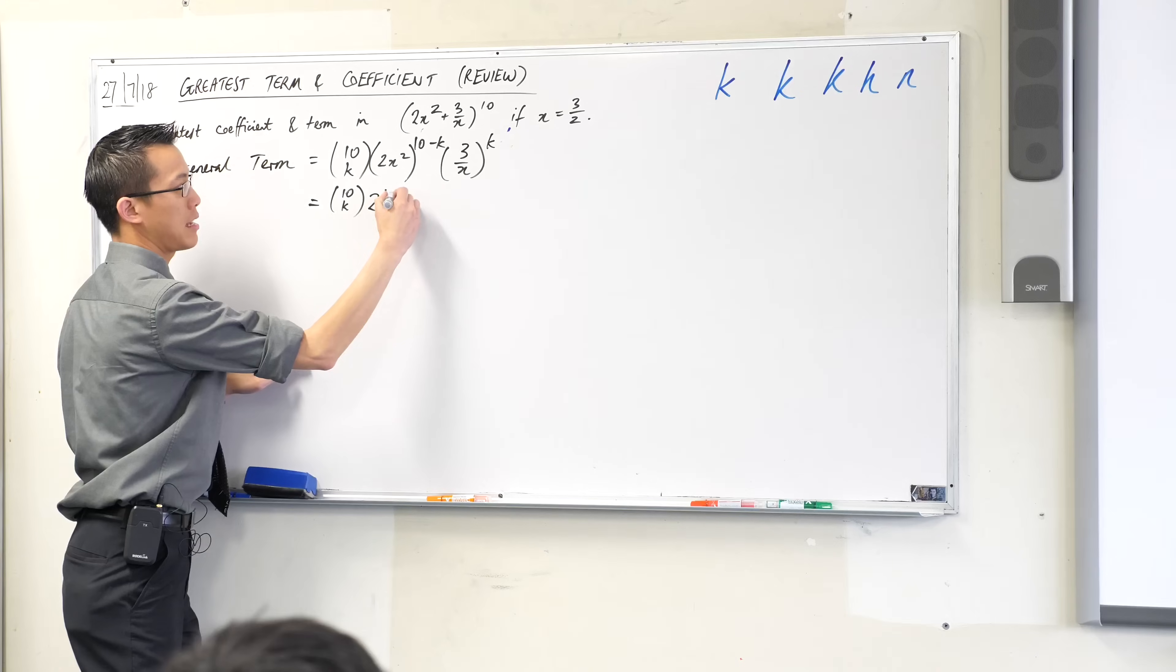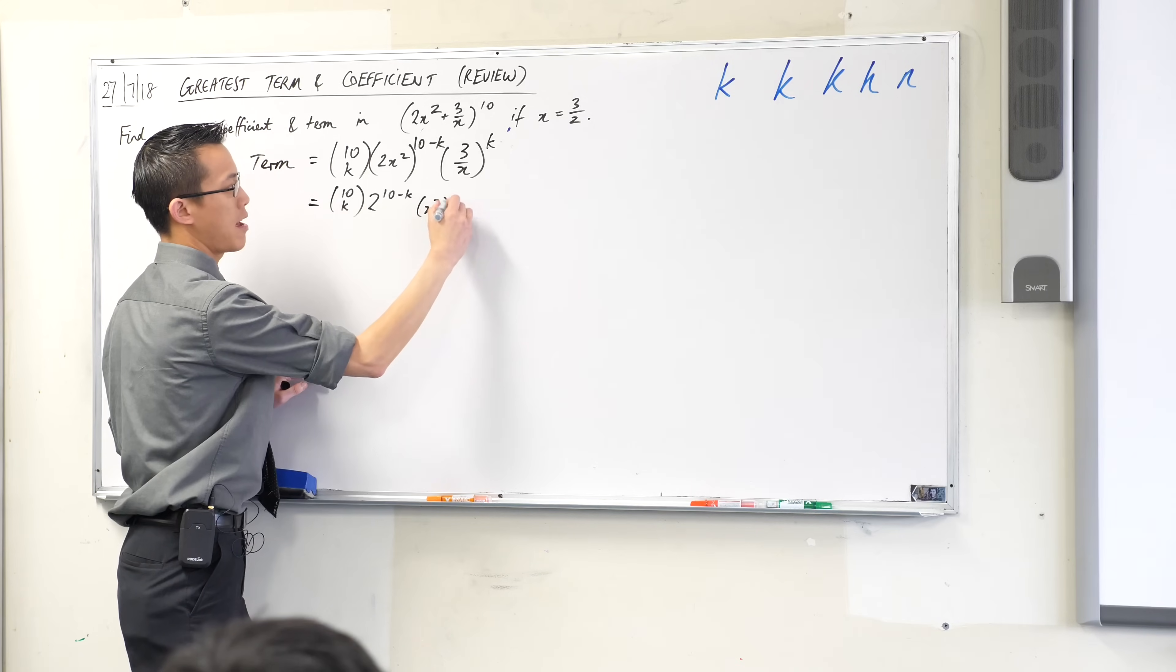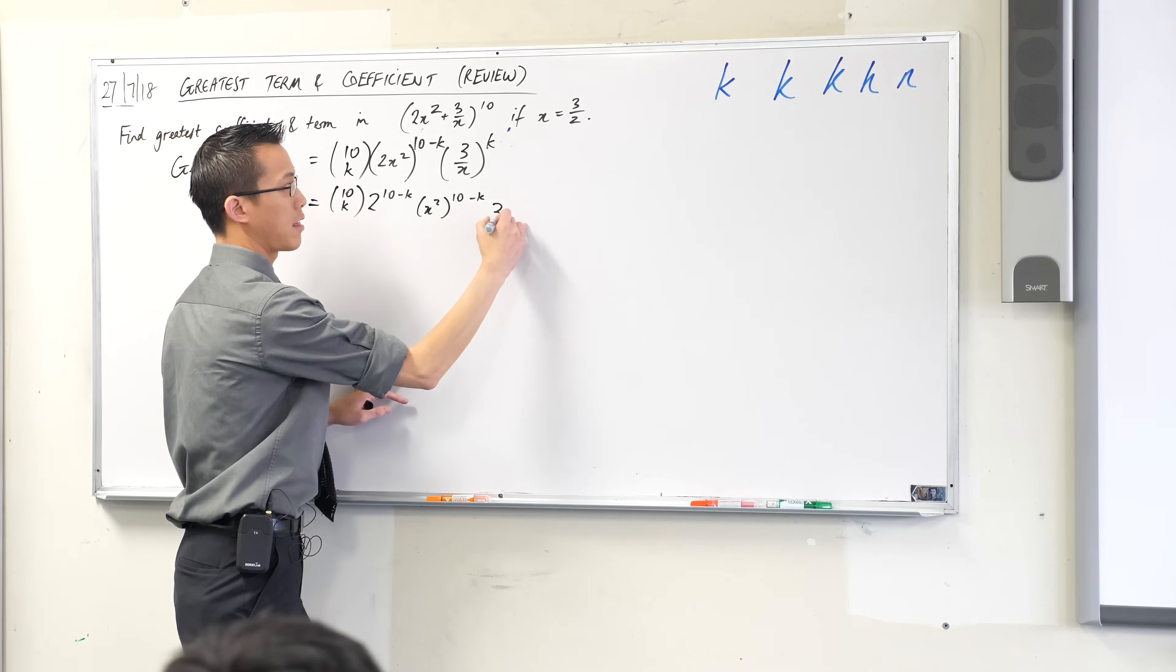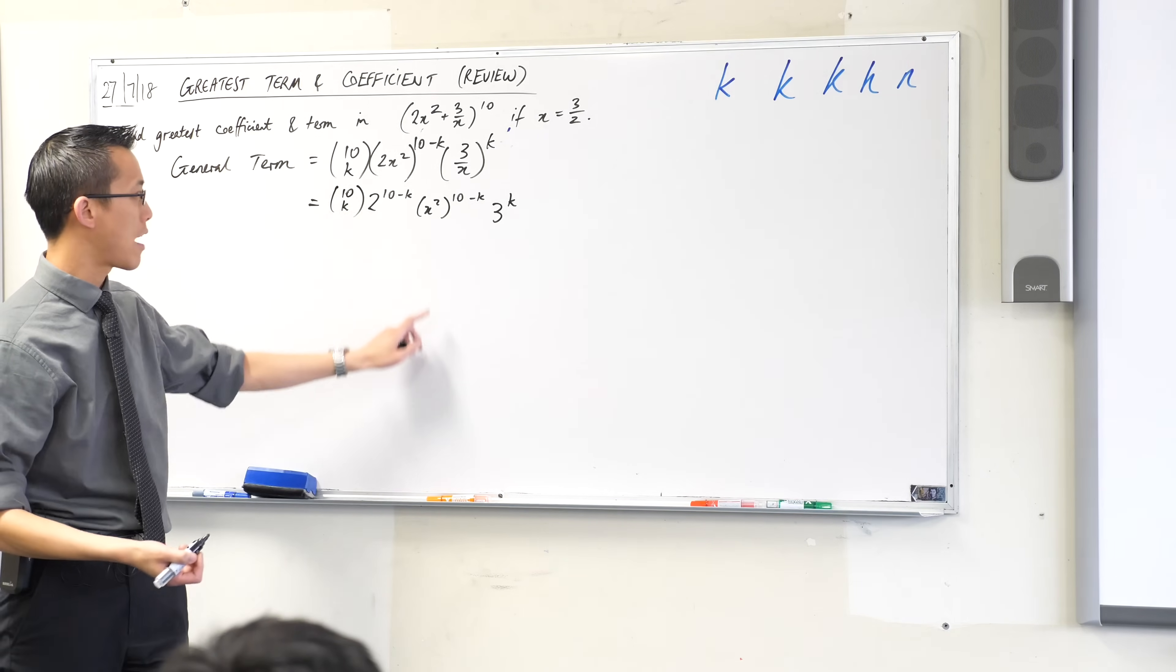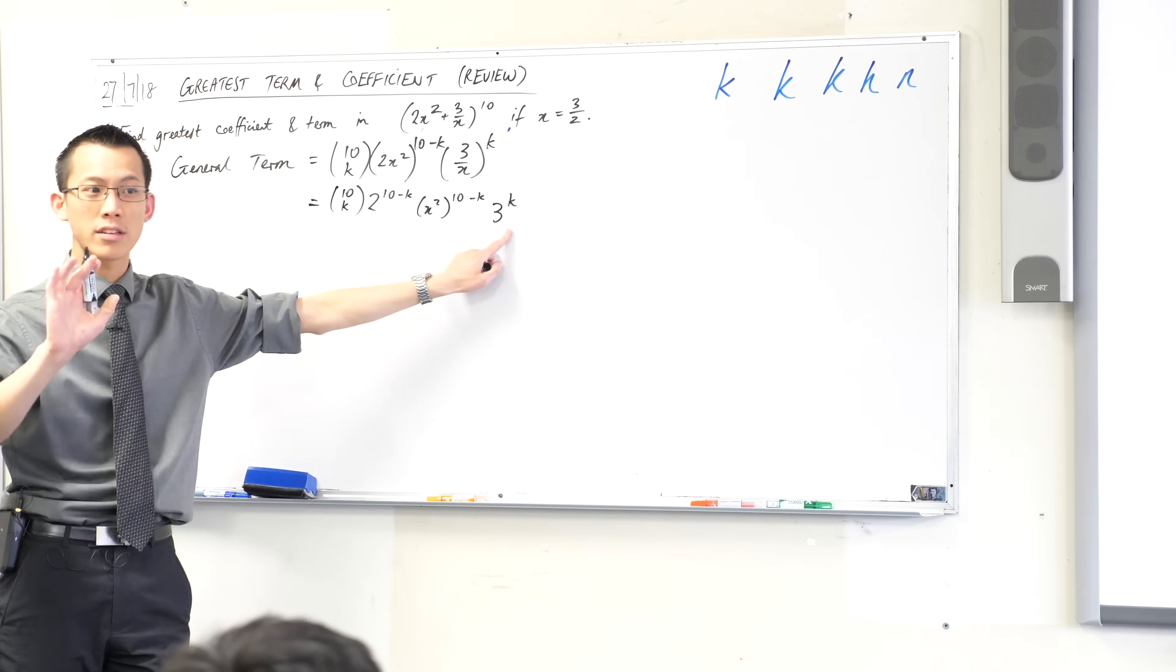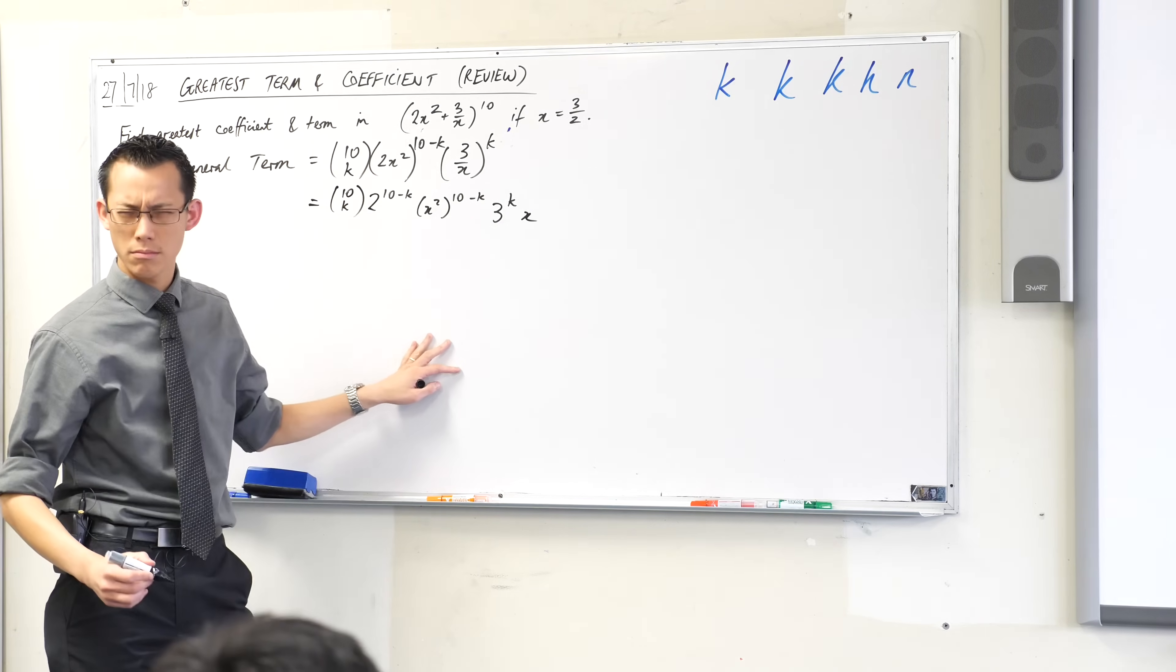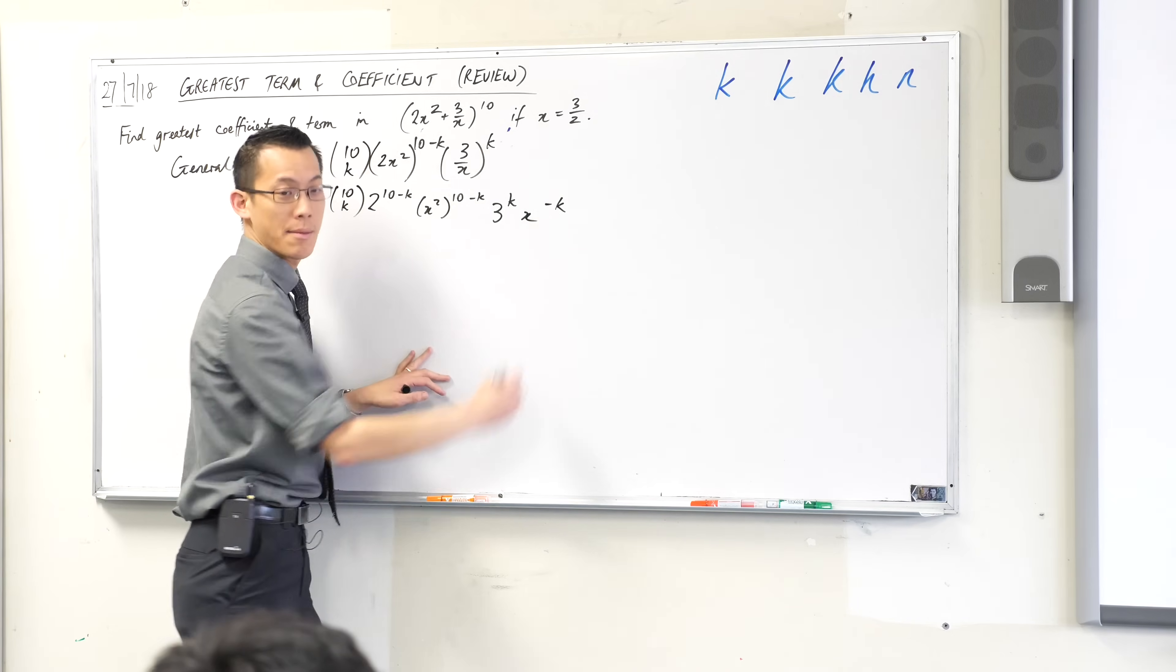So I'm going to have this many 2s and I'm going to have this many x squareds because they come from the same extension. Then over here, I'm going to have this many 3s and I'm going to take this opportunity to write, because I'm going to get these to put together in a second, I'm going to write the next thing not as a fraction but with a negative index. So I'm going to write it as x to the negative k. Very good. There's a negative 1 and then there's a k.